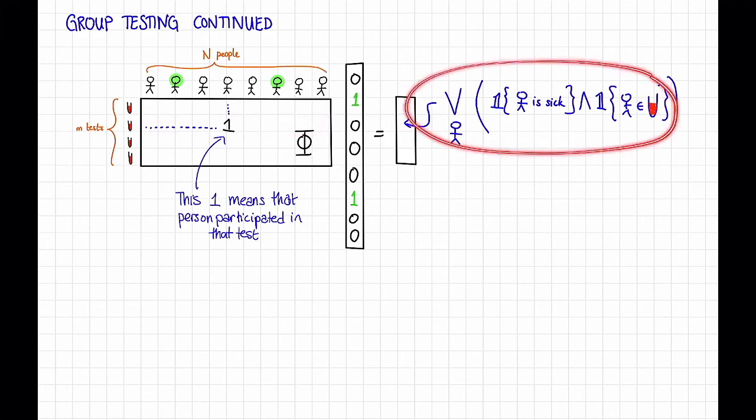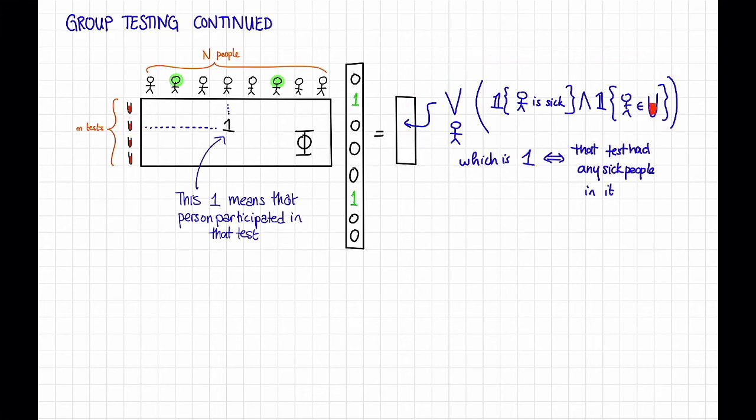Okay, but what is this equation saying? This is going to be 1 if and only if this test had any sick people in it. A.k.a. if and only if that test comes up positive.